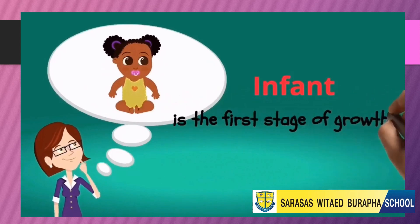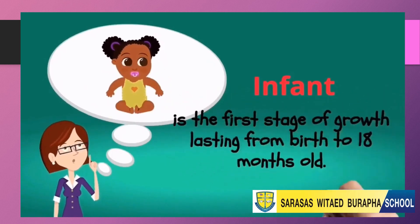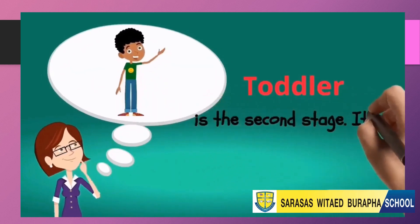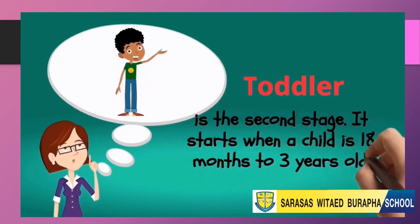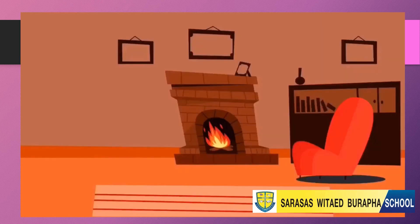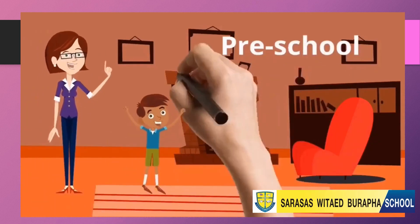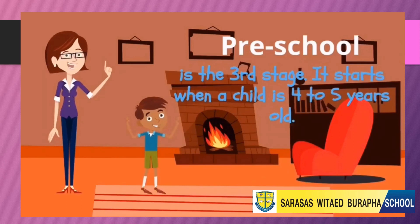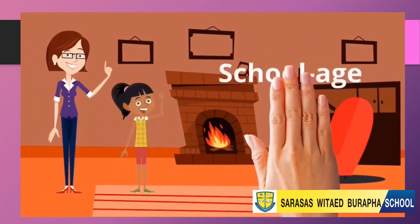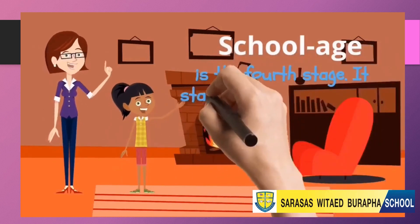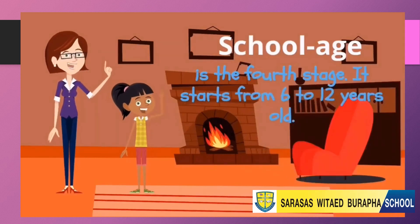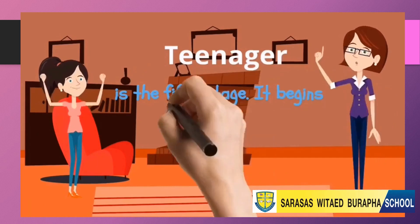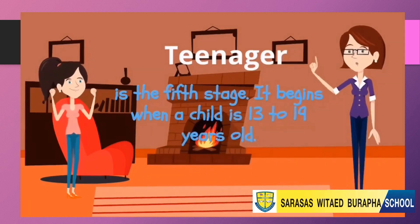Infant is the first stage of life, lasting from birth to 18 months old. Toddler is the second stage; it starts when a child is 18 months to three years old. Preschool is the third stage; it starts when a child is four to five years old. School age is the fourth stage; it starts from six to twelve years old. Teenager is the fifth stage; it begins when a child is 13 to 19 years old.